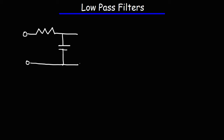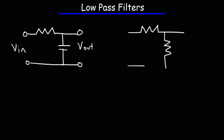The first type of low-pass filter we're going to talk about is the RC low-pass filter. The circuit looks like this. Here we have the input voltage and the output voltage. This circuit looks similar to a voltage divider circuit. Let's call the first resistor R1, and let's call this R2.